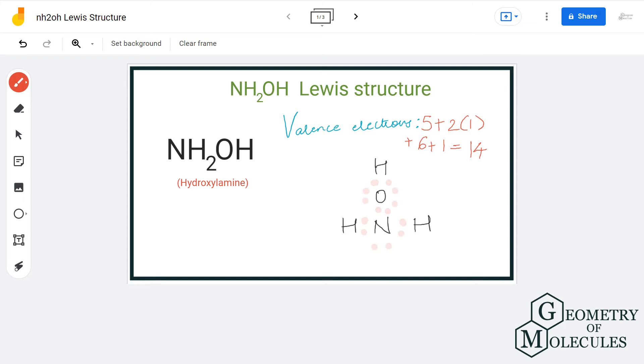And this is it. This is a Lewis structure of NH2OH where we use up all our valence electrons and nitrogen forms single bond with two hydrogen atoms and one hydroxyl group. I hope this video helps you to understand this Lewis structure.